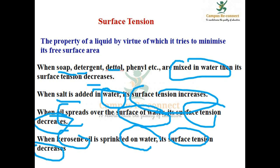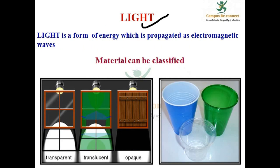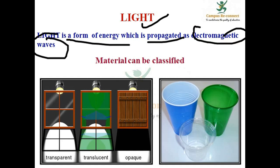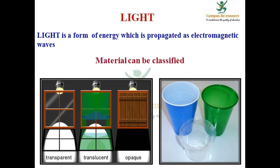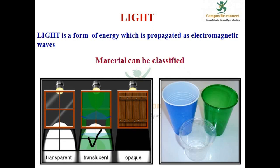This is common to use in daily life. This is an example worth remembering. Light is a form of energy; it propagates as electromagnetic waves. This is a form of electromagnetic wave. One type is transparent.